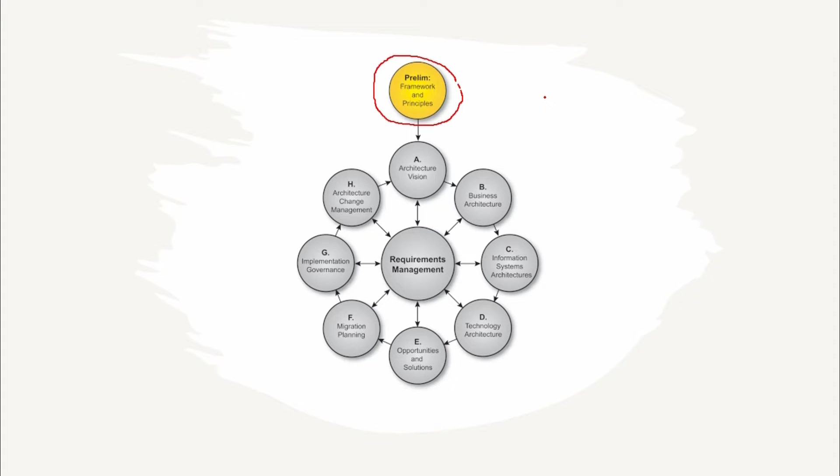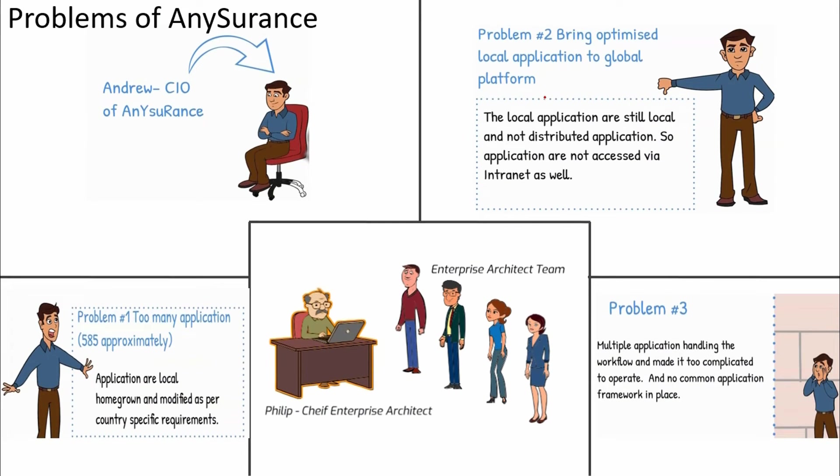Let's have a quick look at the problem we have discussed in the case study. Andrew the CIO is facing three problems at a high level that we need to solve. Problem one being his company having too many scattered applications in different countries doing similar tasks. Secondly, the applications are local and not distributed. The third problem he stated is multiple applications handling complicated workflow made the business harder and there are no common solutions built yet to handle this.